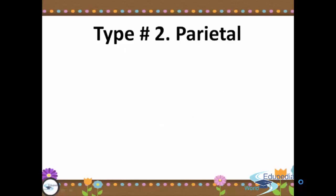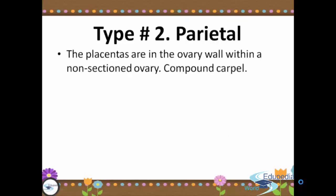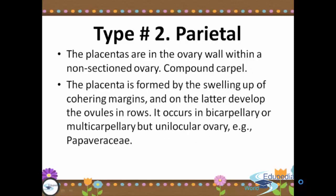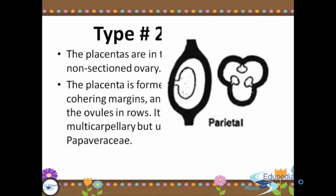The second type of placentation is parietal. The placentas are in the ovary within the non-sectioned ovary of compound carpal. The placenta is formed by the swelling up of coherent margins, and on these develop the ovules in rows. It occurs in bicarpillary or multicarpillary but unilocular ovary. Here we have the parietal placentation image.